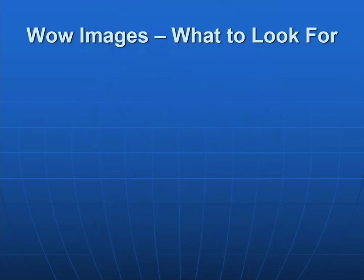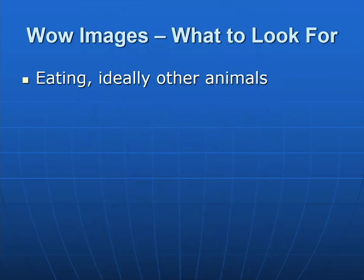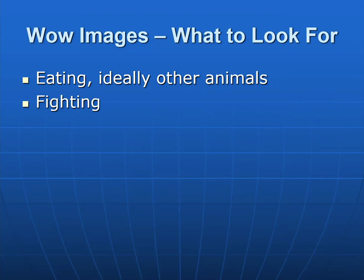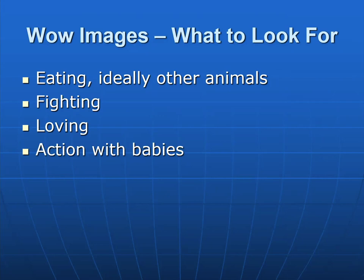Wow images — what to look for. These are behaviors or activities that, if you can capture them, will take your animal photography up to the next level. Things to look for: animals eating other animals — it can be harsh, but that's the circle of life and they make compelling photographs. Animals fighting each other, either within species or between species. Animals that are showing affection. Animals with their babies. Animals in motion. And animal eyes. These are things to look for in your images that can greatly improve them.